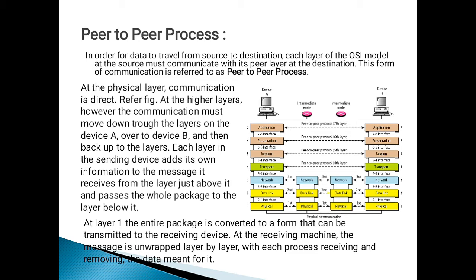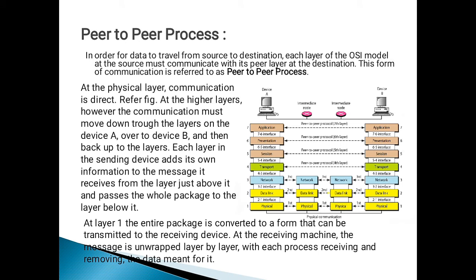At the higher layers, however, the communication must move down through the layers on device A, over to device B, and then back up through the layers. Each layer in the sending device adds its own information to the message it receives from the layer just above it and passes the whole package to the layer below it. At layer 1, the physical layer, the entire package is converted to a form that can be transmitted to the receiving device. At the receiving machine, the message is unwrapped layer by layer, with each process receiving and removing the data meant for it.